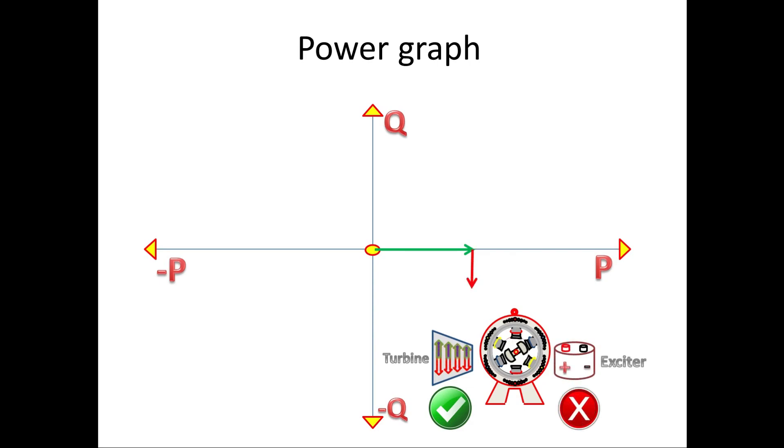The working of rotor is to produce strong magnetic field. Since the exciter is not delivering power to rotor, it has to take power from grid. Due to this, the VAR will be minus. That is, it absorbs VAR from the grid. So P is positive and Q is minus. This case comes under fourth quadrant.